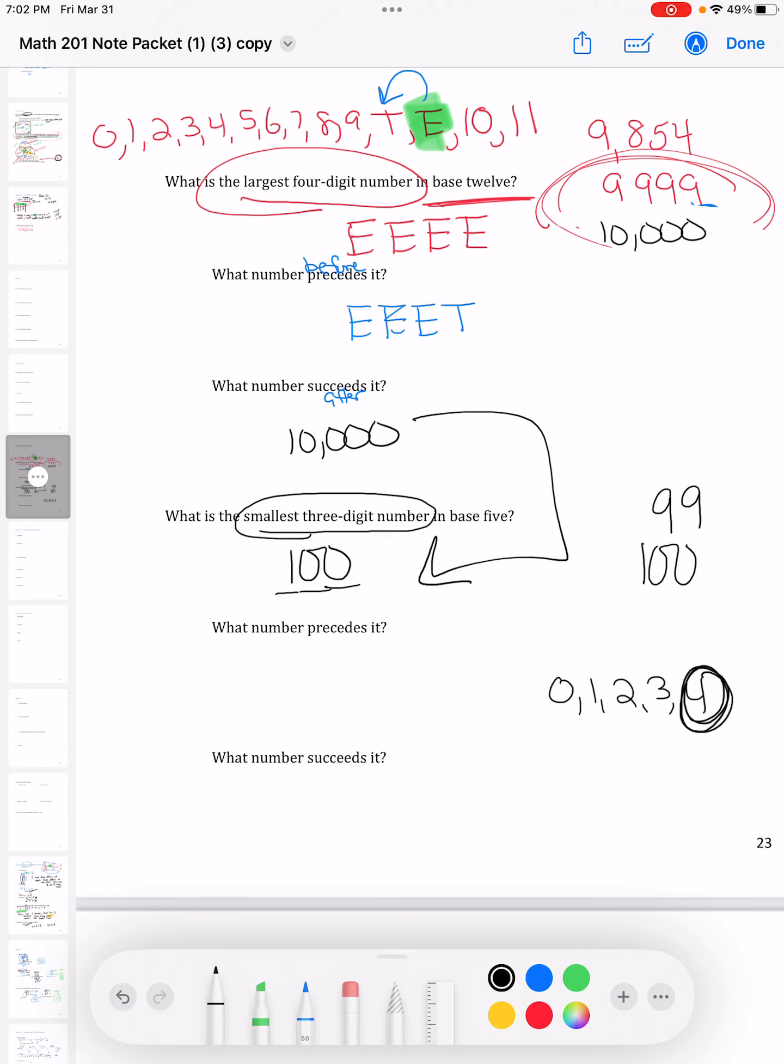The largest digit in base five is four. So instead of 99, I'm going to write four, four.